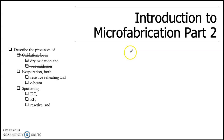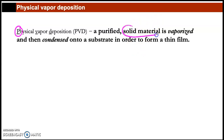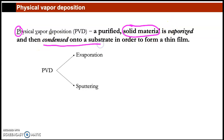Now let's move to evaporation. Evaporation is one type of physical vapor deposition. It is called 'physical' because the source must be a solid material — such as a metal or piezoelectric material. That solid material is vaporized and then condenses on the substrate to form a thin film.